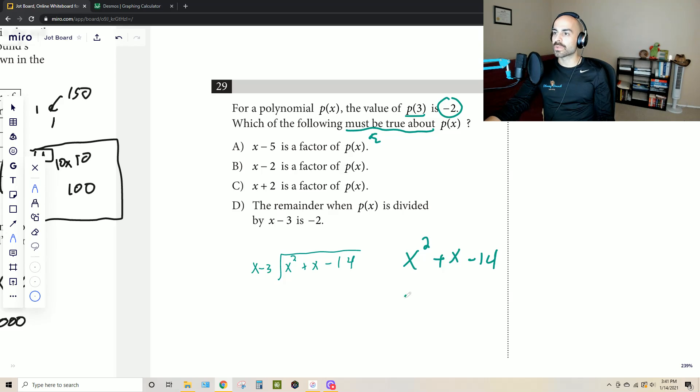and the reason I chose this specific polynomial is that if I plug in 3 for x I know that I'm going to end up with negative 2. This is 9 plus 3 which is 12, and then 12 minus 14 equals negative 2. So this is a polynomial that if I plug in 3 I do get negative 2.